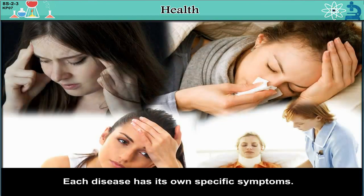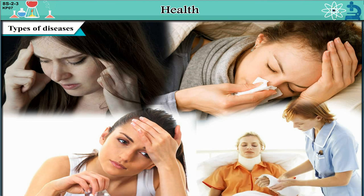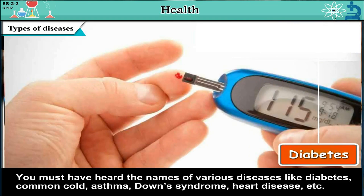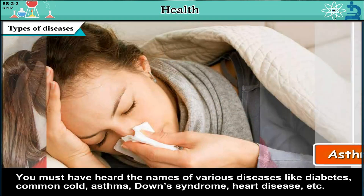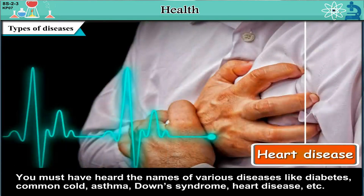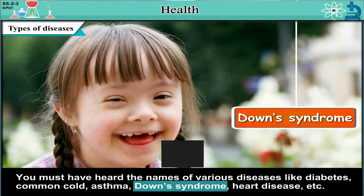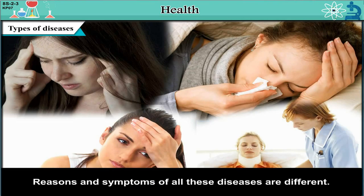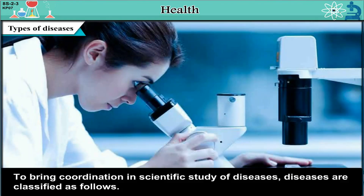Each disease has its own specific symptoms. Types of diseases — you must have heard the names of various diseases like diabetes, common cold, asthma, Down syndrome, heart disease, etc. Down syndrome is a genetic disorder due to a chromosome defect causing intellectual and physical abnormalities. Reasons and symptoms of all these diseases are different. To bring coordination and scientific study of diseases, diseases are classified as follows.